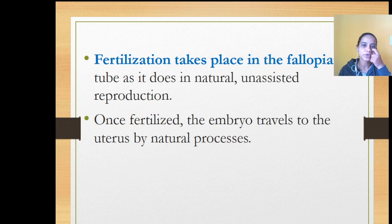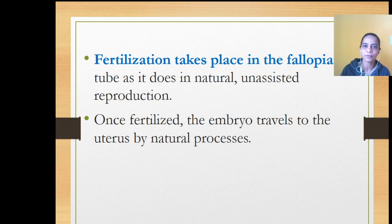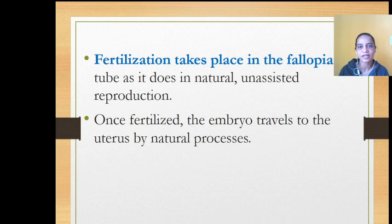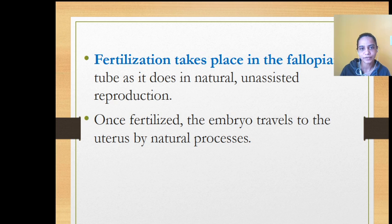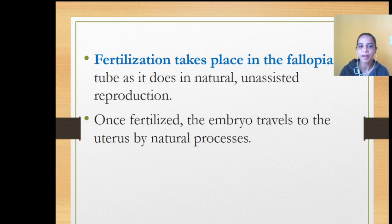In normal fertilization, when the egg is released after ovulation, it moves upward in the fallopian tube. If spermatozoa are available by then, fertilization of the egg and sperm takes place somewhere in the fallopian tube. Similarly in GIFT, fertilization takes place in the fallopian tube itself, and then the blastocyst moves downward to the uterine cavity and gets implanted.